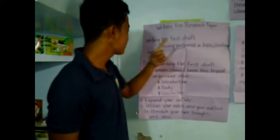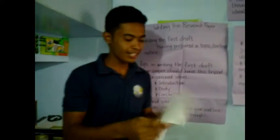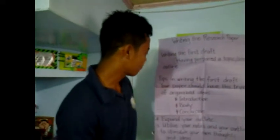Hi everyone. The topic I will discuss is about writing the research paper and revising the paper. First is writing the research paper. Have you prepared a topic sentence or outline? Your slogan writing should be formed from notes to outline to draft. Keeping the thesis statement clearly in your mind will help you to write the first draft.